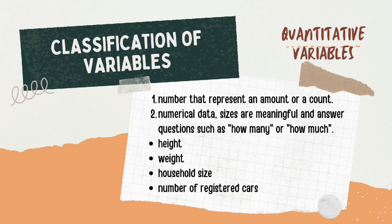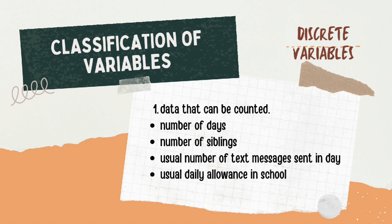Next are the quantitative variables — numbers that represent an amount or count, numerical data, whose sizes are meaningful and answer questions such as how many or how much. Examples include height, weight, household size, and number of registered cars.